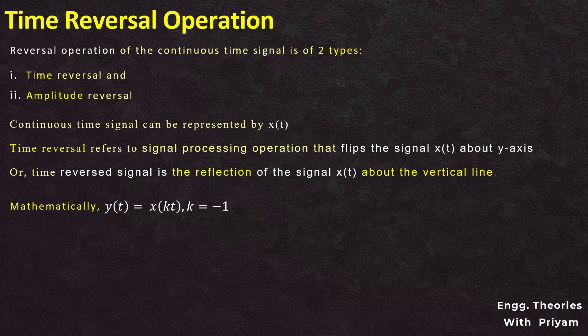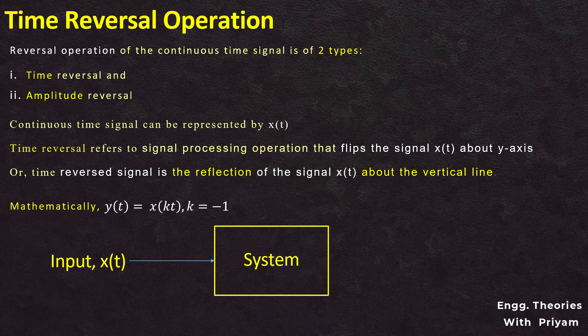Consider a system which performs the time reversal. The input to this system is the signal x(t) and the output of this system will be y(t), which is the time-reversed version of the input signal x(t), or y(t) = x(-t).